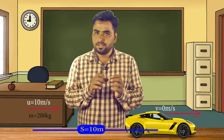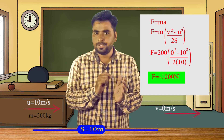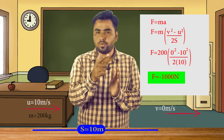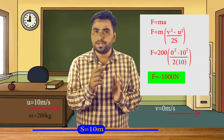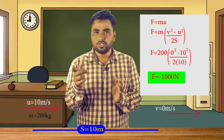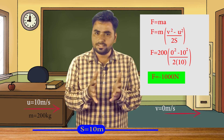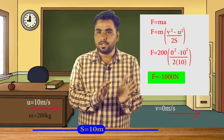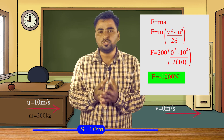In this question, let's put the values: F = m × (v² − u²) / 2s = 200 × (0² − 10²) / (2 × 10). Calculating: 200 × (−100/20) = 200 × (−5) = −1000 Newton. So the retarding force is −1000 Newton.